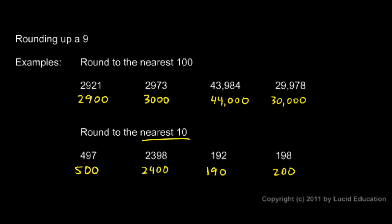And again, the next highest ten ends up also being a perfect hundred, and that's okay. 198 rounded to the nearest ten is 200.